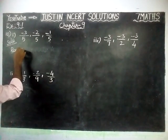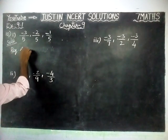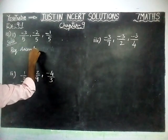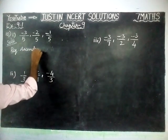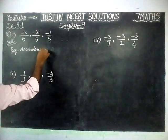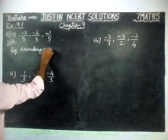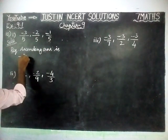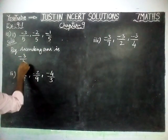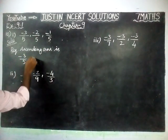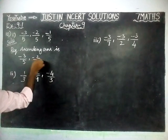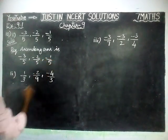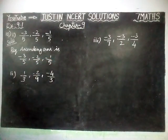Therefore, the required ascending order is: minus 3 by 5, minus 2 by 5, minus 1 by 5.